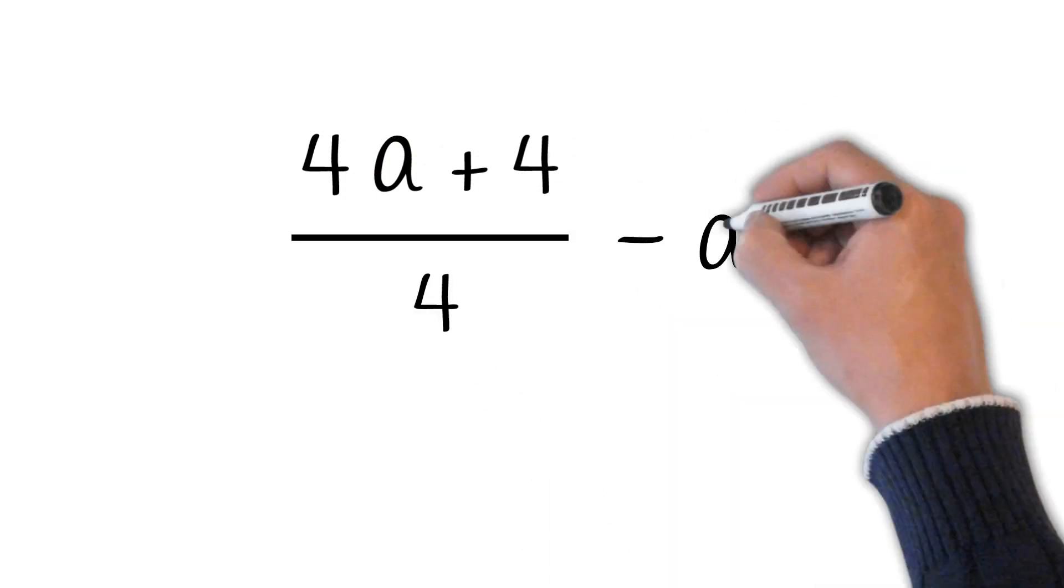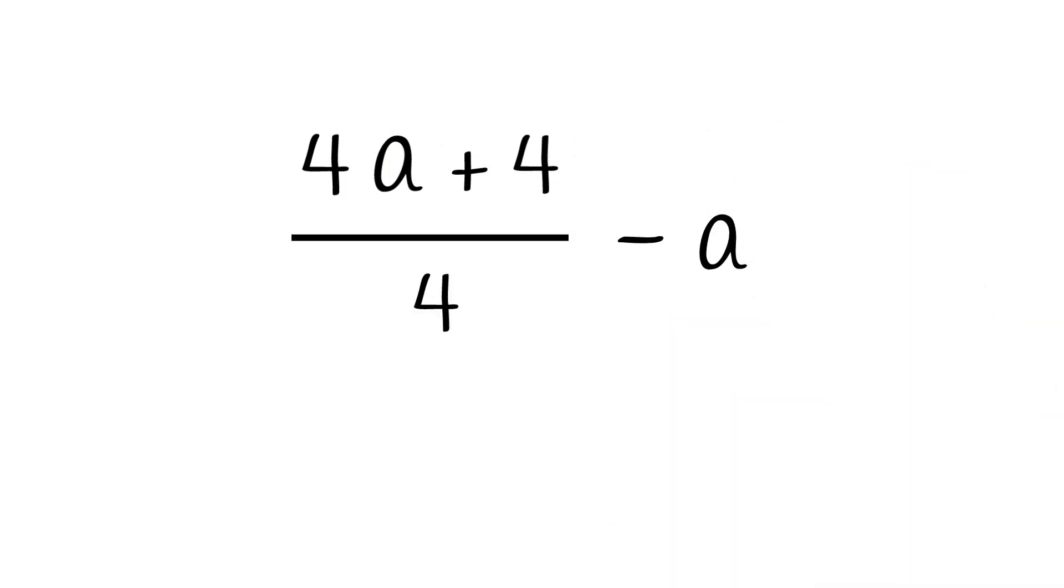Then we have 4a. Add its product by 4, that is 4a + 4. Divide the sum by 4, then subtract its quotient by your chosen integer. Simplifying this linear expression will give us the number 1.